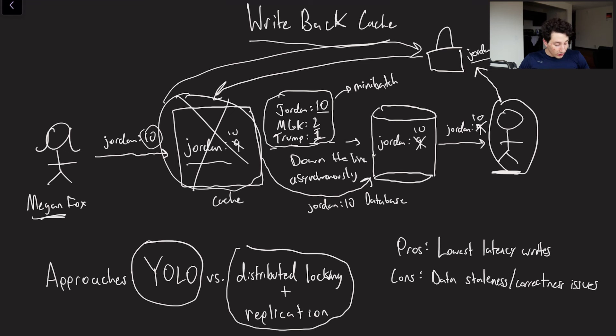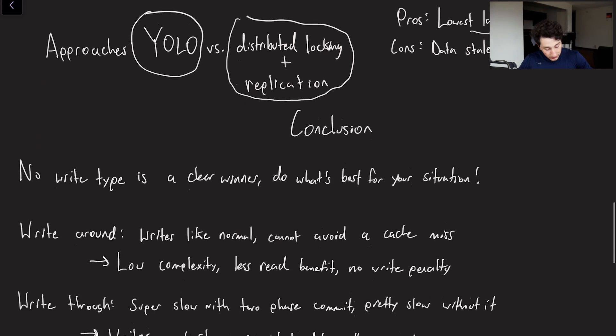So the pros, like I mentioned, quick writes, the cons, well, if that cache goes down, you're in trouble. And if this guy over here decides to read the value before the cache is written back, you're also in trouble. Of course, if your application doesn't care about data staleness issues, then that's great. That would be a good example of a time that you would want to use a write-back cache.